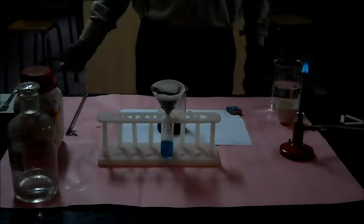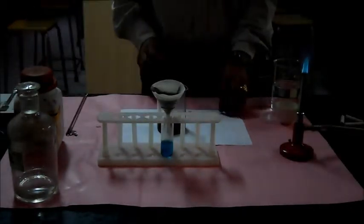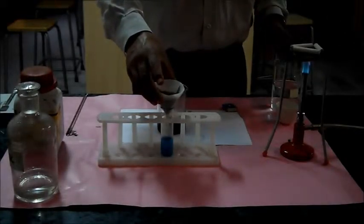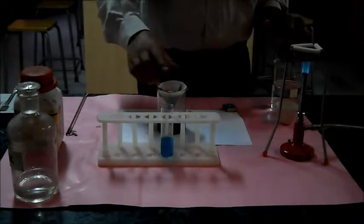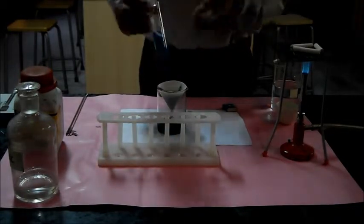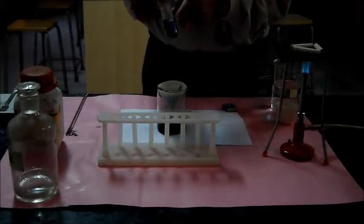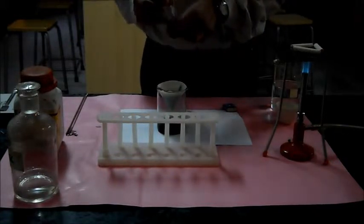For heating, I have got here Bunsen burner. I will be using this fire gauge over it for drying up. As you could see, the blue color solution is due to the presence of copper sulfate in it, which is a blue color salt.